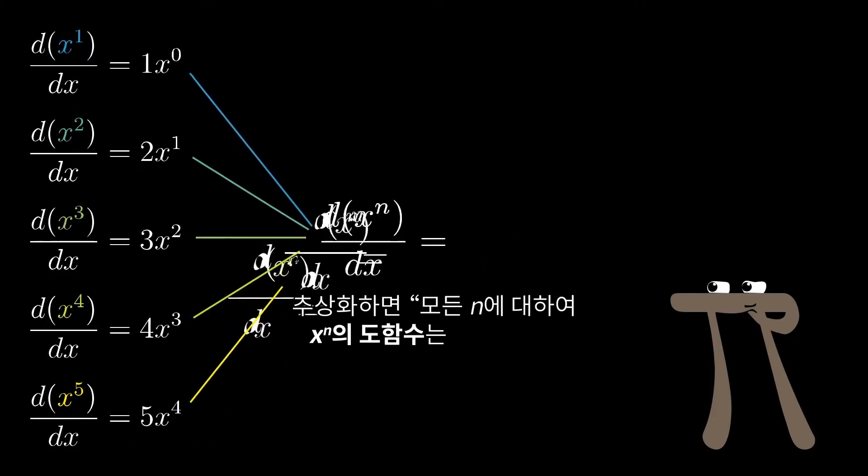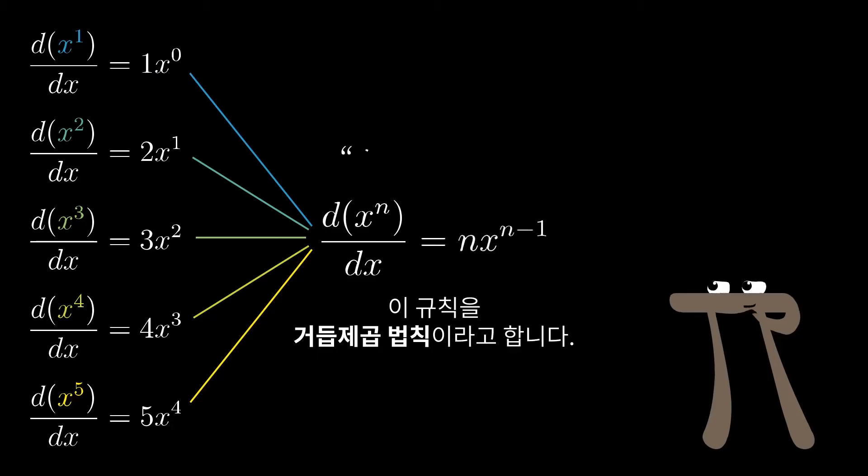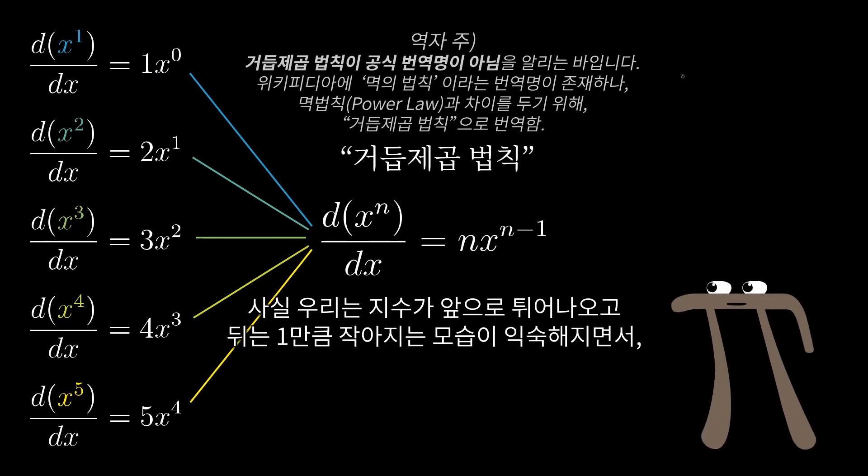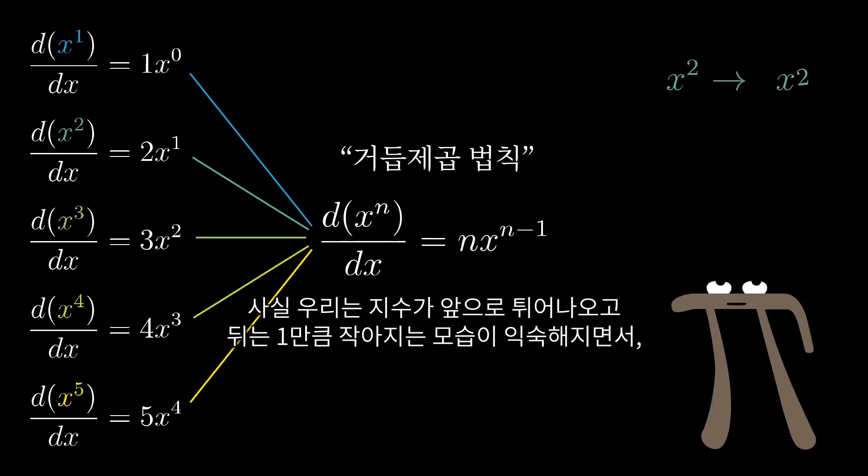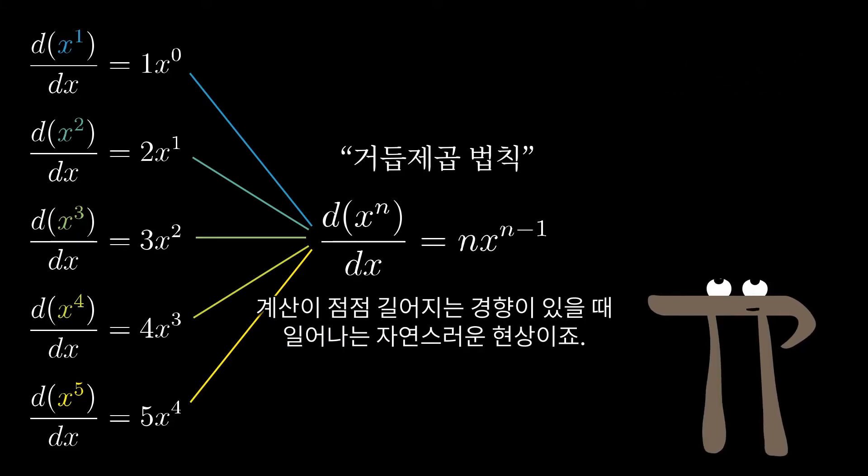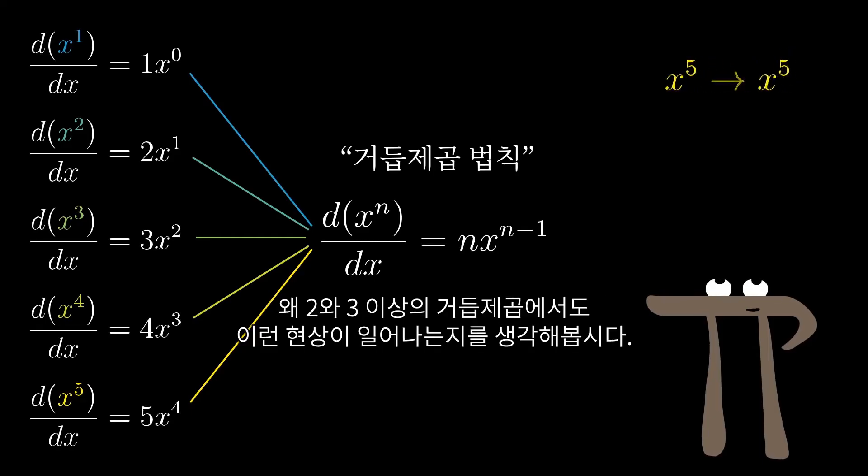Abstractly, you'd write this as the derivative of x to the n for any power n is n times x to the n minus 1. This right here is what's known in the business as the power rule. In practice, we all quickly just get jaded and think about this symbolically, as the exponent hopping down in front, leaving behind one less than itself, rarely pausing to think about the geometric delights that underlie these derivatives. That's the kind of thing that happens when these tend to fall in the middle of much longer computations.